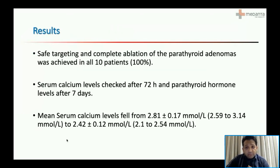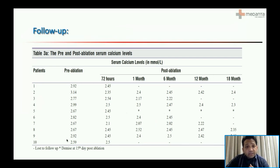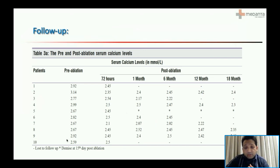Safe targeting and complete ablation of parathyroid adenomas was achieved in all 10 patients. Serum calcium was checked 72 hours later and parathyroid hormone was checked after seven days. Mean serum calcium levels normalized within 72 hours in all patients. At one-month follow-up, two patients dropped out and one patient died of a cause unrelated to ablation — seven patients had normal calcium. At six months, one more patient dropped out, leaving five patients with normal calcium levels.